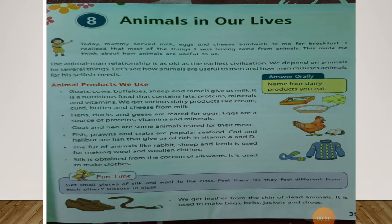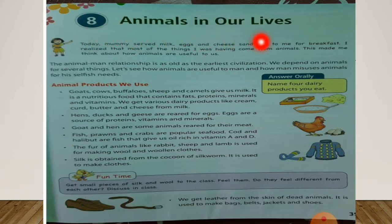Students, open page number 35 in your EBS book and keep a pencil with you to underline hard words. On this page you can see the number of the chapter, that is 8, and the name of the chapter, that is Animals in Our Lives. And our little girl — who is she?